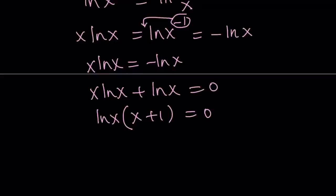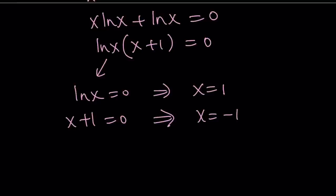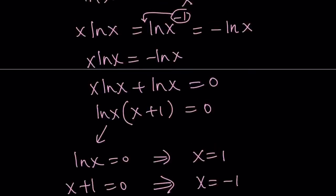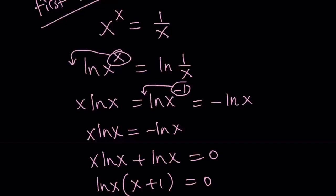And this is nice. Why? Because you have two factors and each of them can be 0. So let's go ahead and check each case. If ln x is equal to 0, this implies x equals 1. And the second one, x plus 1 equals 0, implies x equals negative 1. Obviously, negative 1 does not work with ln. But if you use absolute value, again, you're going to eliminate that problem.